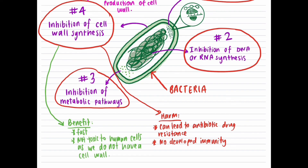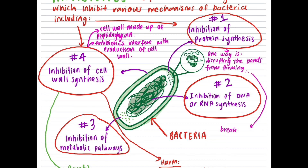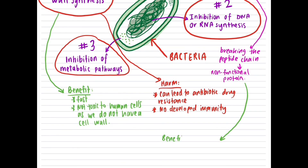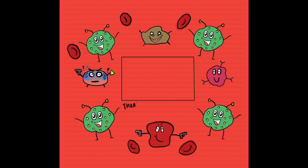The inhibition of protein synthesis can happen in various ways, such as disrupting the enzyme which forms peptide bonds between amino acids, hence breaking the peptide chain. This leads to a non-functional protein, inhibiting bacterial processes. However, this can also lead to antibiotic drug resistance, and this method does not kill the bacteria — it only inhibits it. And that's most of Module 7 of the HSA Biology course summarized. I hope this was helpful and easy to understand — thank you for watching and study hard!